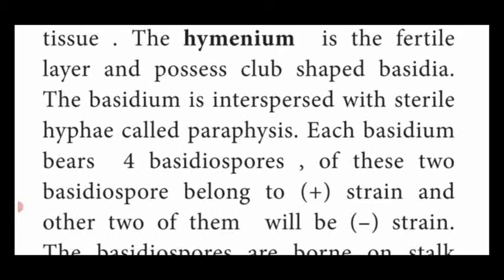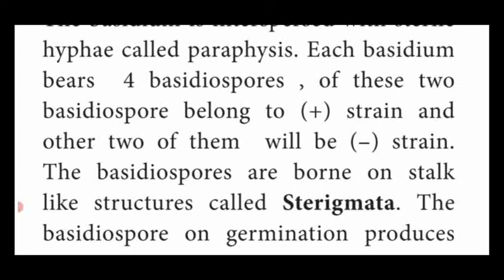Compared to the sub-hymenial layer, the hymenial layer is the fertile layer, which contains club-shaped basidia. These basidia are interrupted by sterile hyphae called paraphysis. Each basidium bears four basidiospores. Out of these four, two are plus strain and the other two are minus strain. These four basidiospores are produced on small slender stalk-like structures called sterigmata.